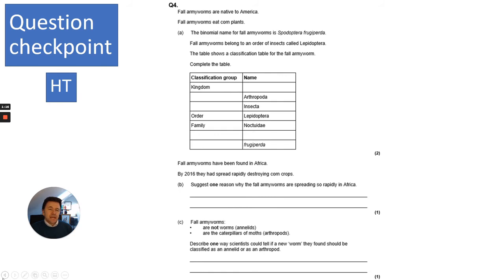It tells you the binomial name and says the fall army worms belong to an order of insects called Lepidoptera. The table shows a classification table for the fall army worm, and it asks you to complete the table. They've given you some information that you're going to use to answer the question. You're going to need to know the hierarchical structures. You only get two marks for this. The kingdom is going to be Animalia because in the question it tells you that they are animals. If they eat corn plants and they're an insect, so it's Animalia. If you remember my mnemonic, king prawn curry or fat greasy sausage, king prawn is phylum, then curry is class, which is Insecta, then order, family, and then genus. The genus in this case, it tells you the binomial name, so it's Spodoptera, and then species.